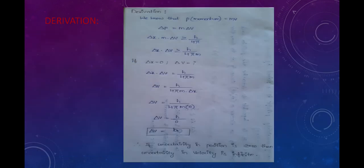Derivation of the Heisenberg uncertainty principle. As we know, p equals momentum, and momentum equals mass into velocity. Therefore, delta p equals m into delta v. Substituting: delta x into m into delta v is greater than or equal to h by 4 pi, which gives delta x into delta v greater than or equal to h by 4 pi m.